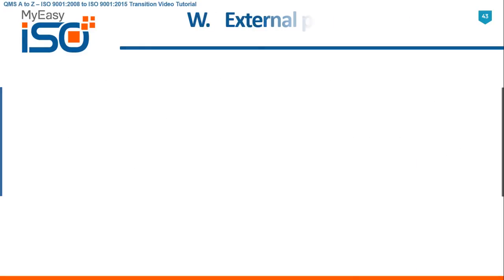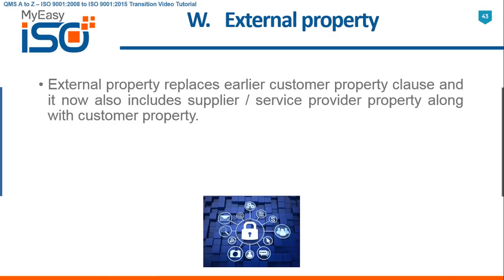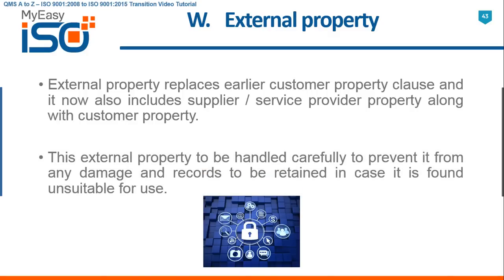W. External Property. External Property replaces the earlier Customer Property clause, and now also includes supplier and service provider property along with customer property. This external property is to be handled carefully to prevent it from any damage, and records are to be retained in case it is found unsuitable for use.